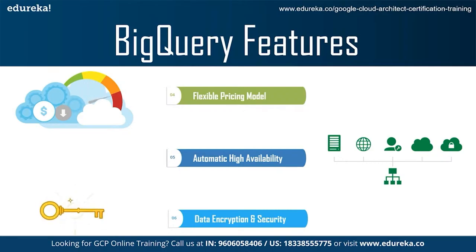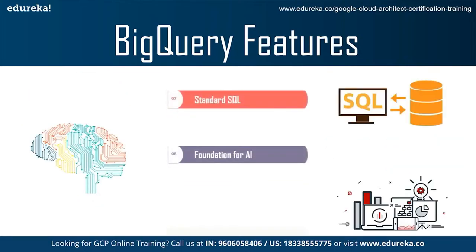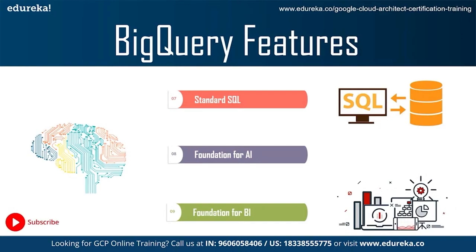Sixth is data encryption and security. You have full control over who has access to the data stored in BigQuery. BigQuery makes it easy to maintain strong security with fine-grained identity and access management via Cloud IAM, and your data is always encrypted at rest and in transit. Seventh is Standard SQL — BigQuery supports a standard SQL dialect which is ANSI 2011 compliant, reducing the need for code rewrite and allowing you to take advantage of advanced SQL features. BigQuery provides free ODBC and JDBC drivers to ensure your current applications can interact with BigQuery's powerful engine. Eighth is foundation for AI — BigQuery provides a flexible, powerful foundation for machine learning and artificial intelligence. Besides bringing ML to your data with BigQuery ML, integrations with Cloud ML Engine and TensorFlow enable you to train powerful models on structured data. BigQuery's ability to transform and analyze data helps you get your data in shape for machine learning.